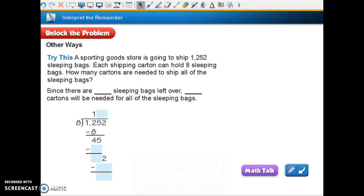Try this at the bottom of the page on page 88. A sporting goods store is going to ship 1,252 sleeping bags. Each shipping carton can hold 8 sleeping bags. How many shipping cartons are needed to ship all the sleeping bags? So let's do our math and see if we have a remainder. Well, 8 went into 12 once, and we had 4 left over, so they brought down their 5. 8 goes into 45 five times. That's 40. And we have 5 left over, so they brought down their 2. And 8 goes into 52 six times, which is 48. And if I do a little regrouping, I'll see that I have a remainder of 4.